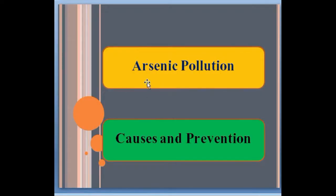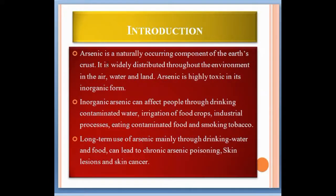Today we talk about arsenic pollution — its causes and prevention. Arsenic is a naturally occurring component of the earth's crust, widely distributed throughout the environment in the air, water, and land.